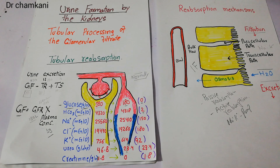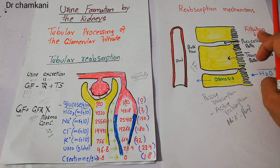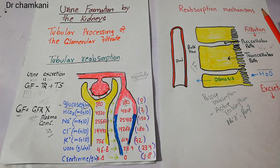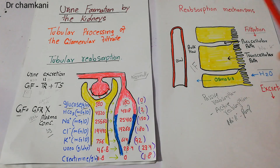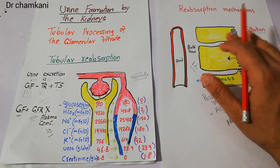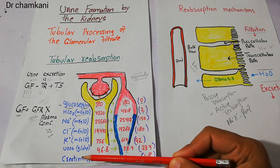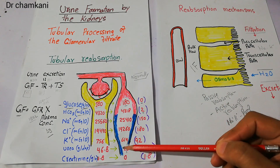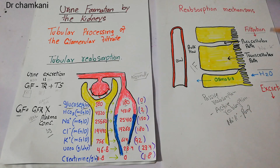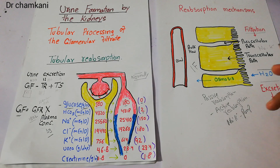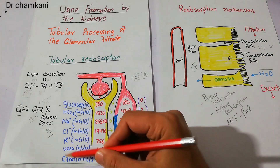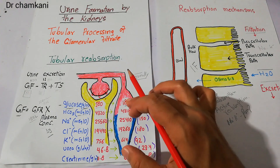Passive reabsorption is also known as diffusion, and in the case of water it is known as osmosis. Substances with high concentration in the proximal tubule naturally move toward the tubule cells and the peritubular capillaries. Substances where the concentration may be equal or even high on the blood side — for example, creatinine — are actively reabsorbed using the sodium-potassium pump or other pumps that generate enough energy to transport substances from the tubule lumen into the peritubular capillaries.